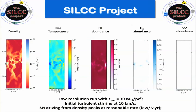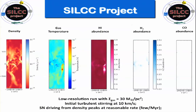You can see that there is still a lot of molecular hydrogen even though there is absolutely no CO. This is interesting because it means there is not a constant CO-to-H2 ratio throughout the galactic disk.